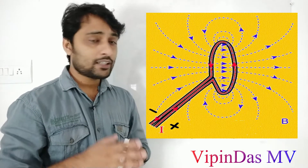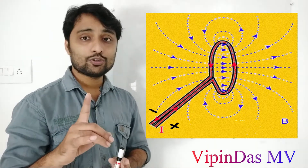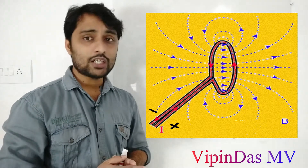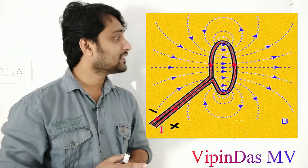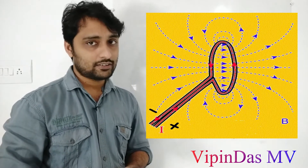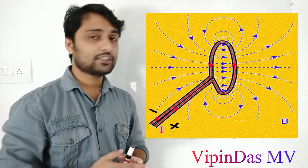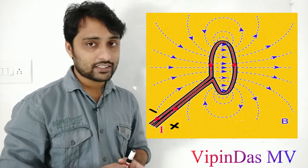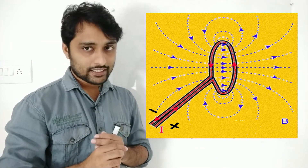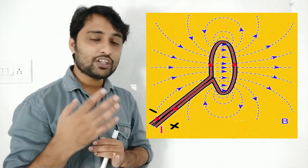There are also some factors that depend on the strength of the magnetic field. One is the intensity of the current. If the intensity of the current is increased, the magnetic lines of force will also increase — more and more circles will form around it. This applies to the circular loop just as it does to a straight conductor.